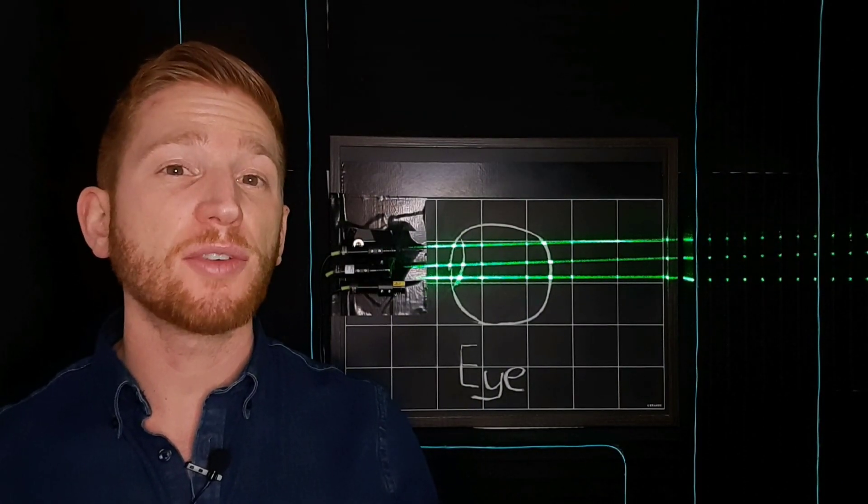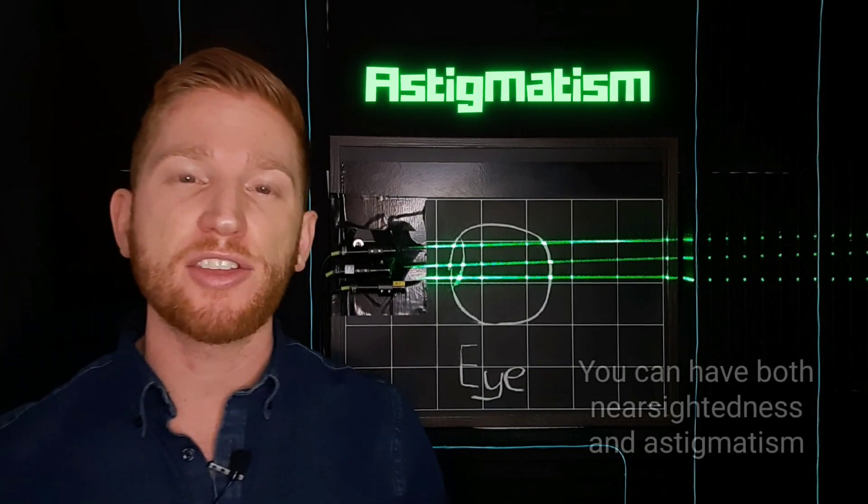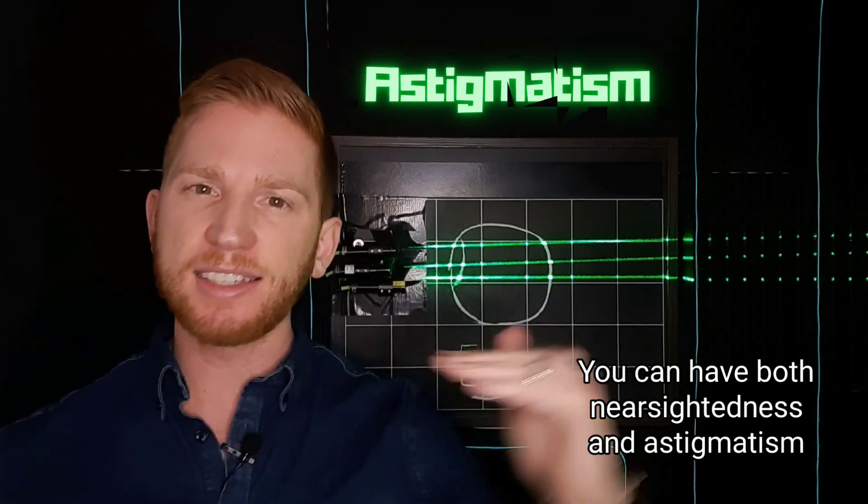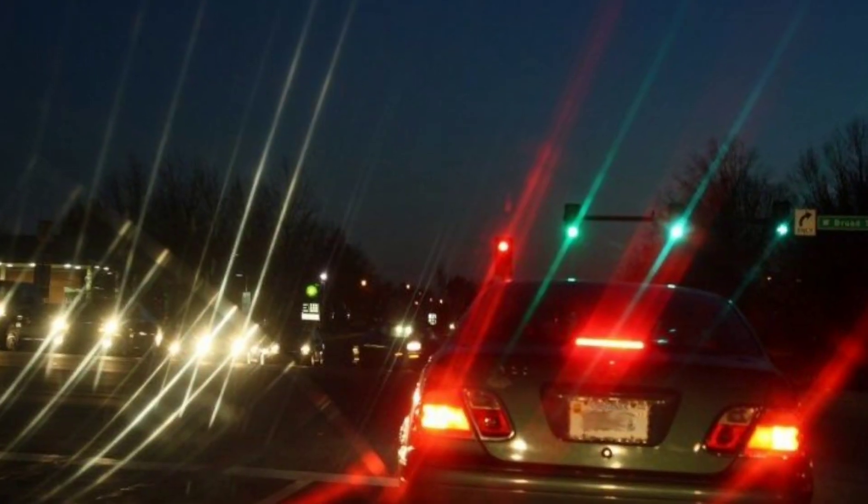40% of people also have astigmatism, meaning that your eyes bend light differently in different directions. This is what causes points of light to be spread out into lines at night.